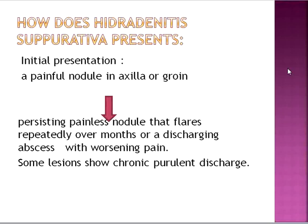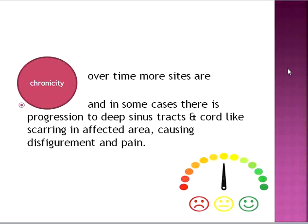How does Hidradenitis Suppurativa present? Initially it presents as a painful nodule in the axilla or groin. Then it persists as a painless nodule that flares repeatedly over months, or turns into a discharging abscess with worsening pain. Some lesions show chronic purulent discharge. Over time, more sites are involved, and in some cases there is progression to deep sinus tracts and cord-like scarring of the affected area, which causes disfigurement and pain.